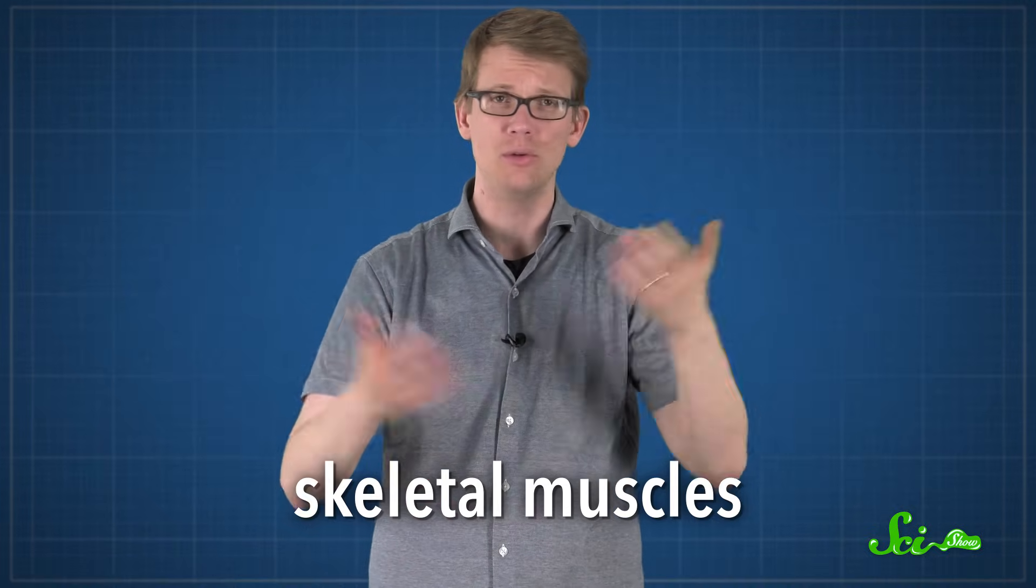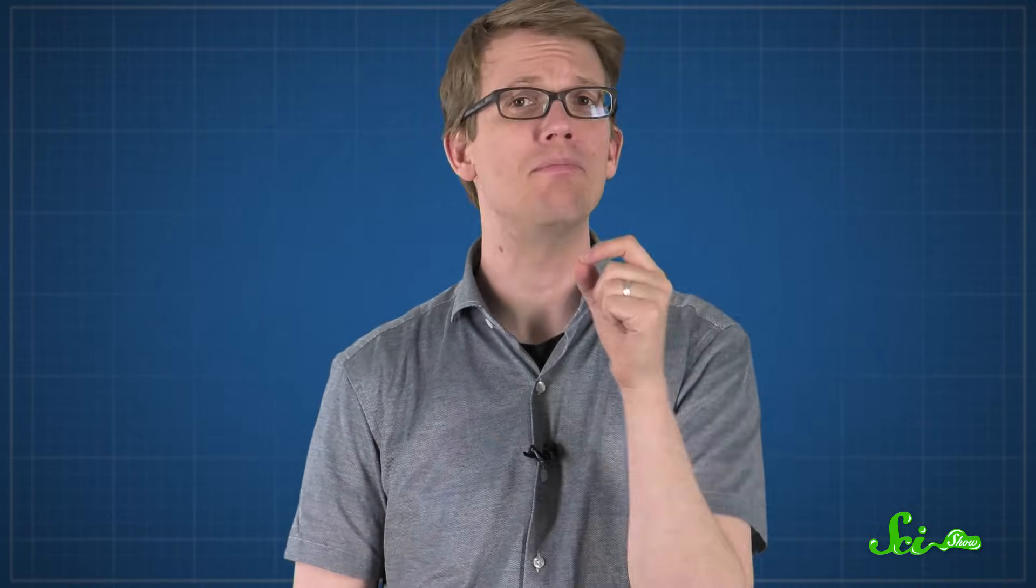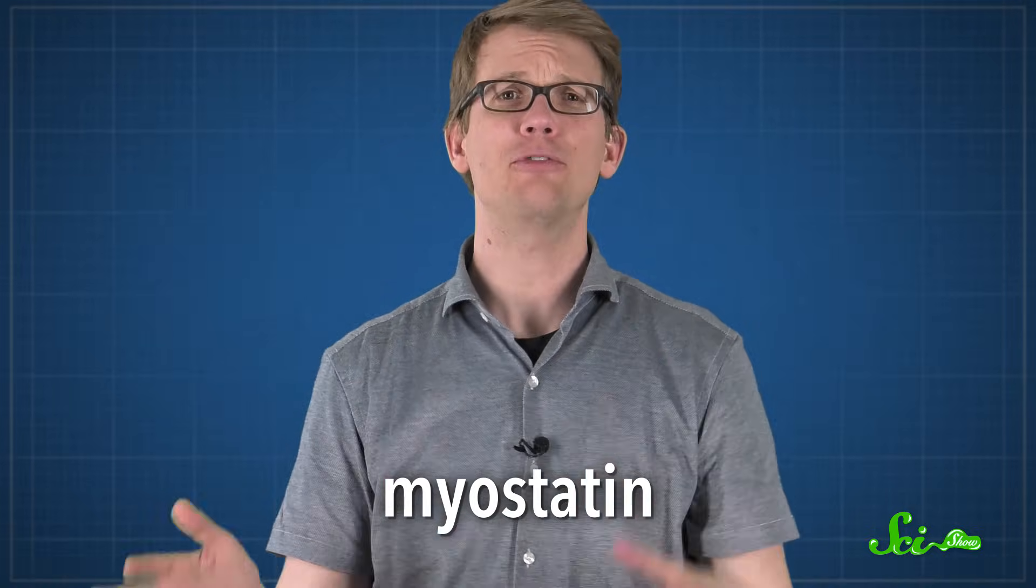There are lots of different molecules that affect how muscle tissue grows, including your skeletal muscles, the ones that you use to move and also look super great. One of those molecules is a protein called myostatin, and it's put together from the instructions in a gene known as MSTN.